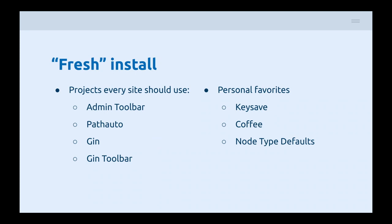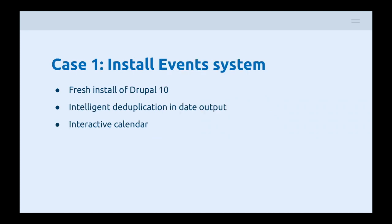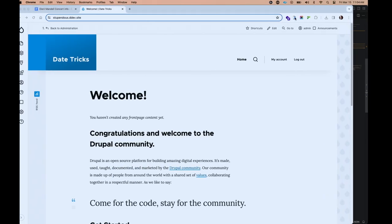Today we're going to start with what I call a fresh install of Drupal — air quotes — because there are a few modules I find it painful to use Drupal without: admin toolbar, path auto, the Gin admin theme, and Gin toolbar. I've also added modules to make things easier: Key Save for saving entity or config forms from the keyboard, Coffee as a convenient way to quickly navigate around your Drupal backend, and Node Type Defaults for setting common default settings for content types. With that said, let's get started on our first use case: creating our initial event system install on a fresh Drupal 10 install, looking for intelligent deduplication of data output and an interactive calendar.